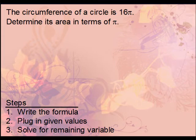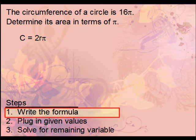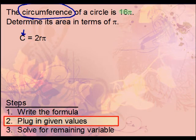Now let's try another: you're given the circumference of a circle — determine the area in terms of pi. Since you're given the circumference, start with the circumference formula. There are two versions — one using diameter, one using radius. We'll use the radius version because the area formula involves radius.